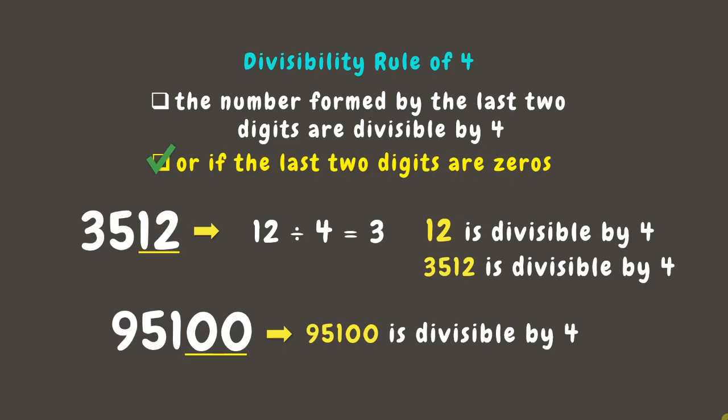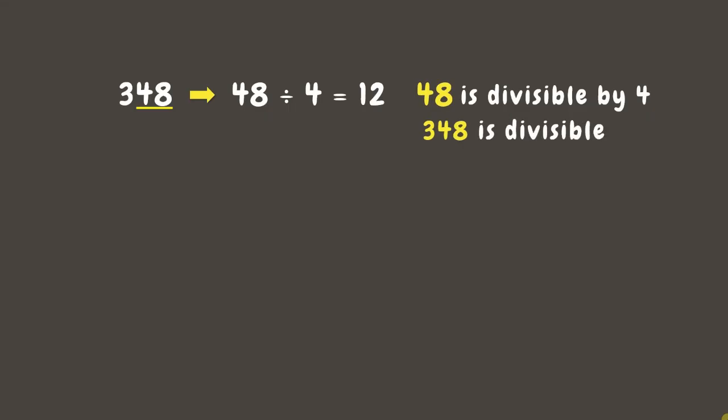Let's have more examples. First, let's take the number 348. Look at its last two digits. If we divide it by 4, the result is 12. Since there's no remainder, it means 48 is divisible by 4, which also makes the entire number 348 divisible by 4.